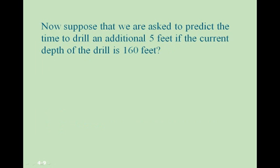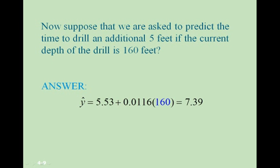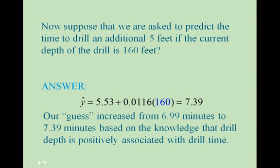Now suppose we are asked to predict the time to drill an additional 5 feet if the current depth of the drill is 160 feet. We can use the regression line found previously. The depth, our x value, is 160 feet, so we plug that into the regression equation. When we evaluate this, we get 7.39 minutes. Our guess has increased from the mean of 6.99 minutes to 7.39 minutes, based on the knowledge that drill depth is positively associated with drill time.